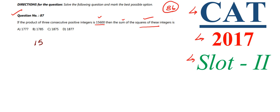Looking at 15,600, we notice two zeros at the end. One of the three numbers must be 25, because multiplying 25 with any two more consecutive integers will always produce two trailing zeros. With any other combination of three consecutive integers, we wouldn't consistently get two trailing zeros.